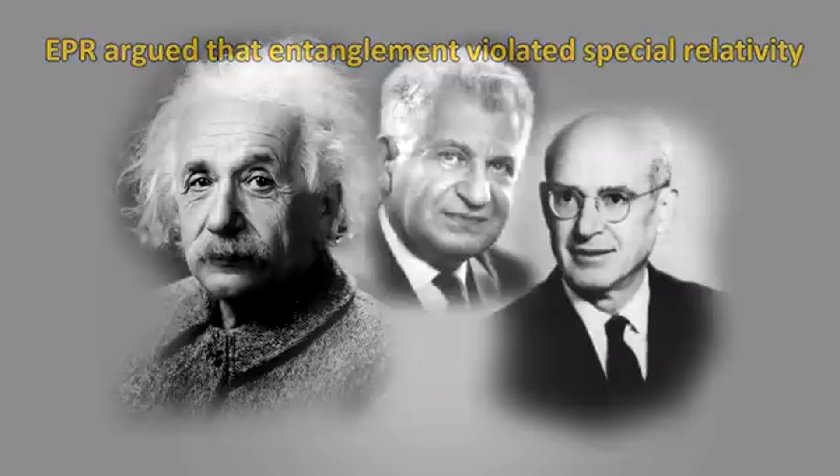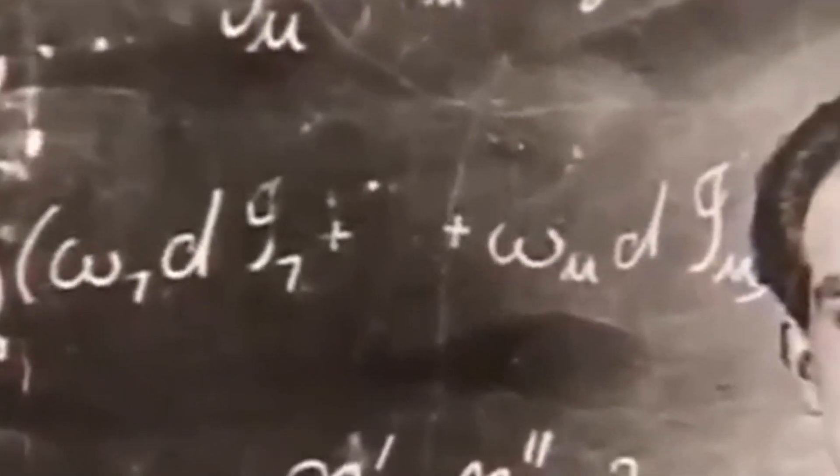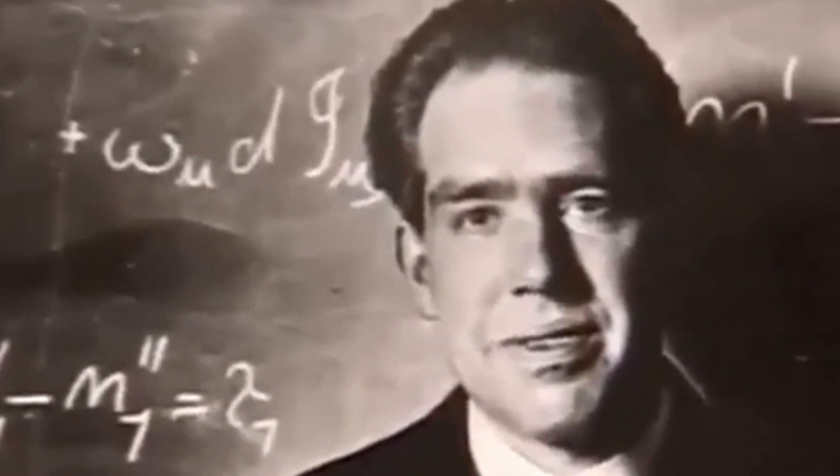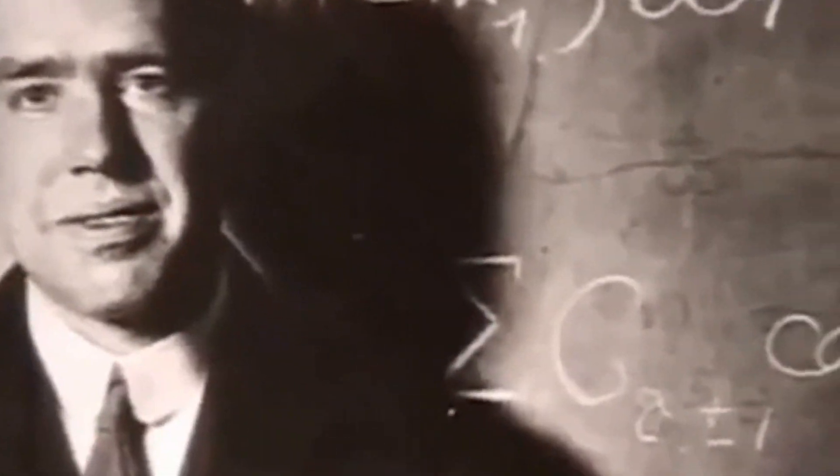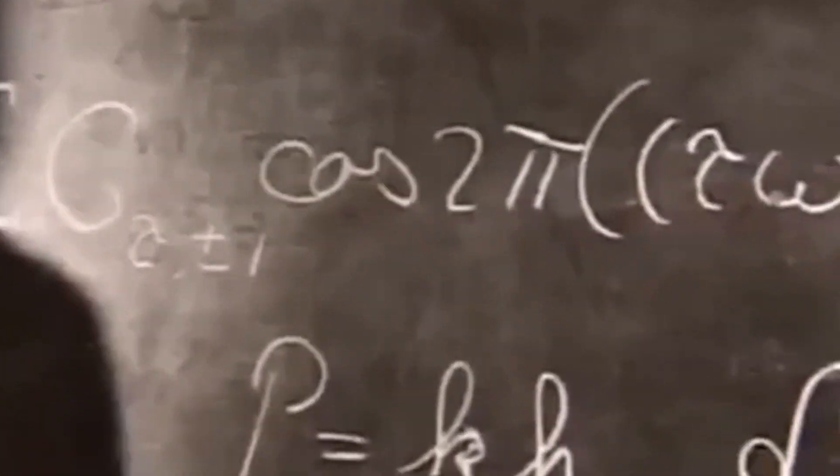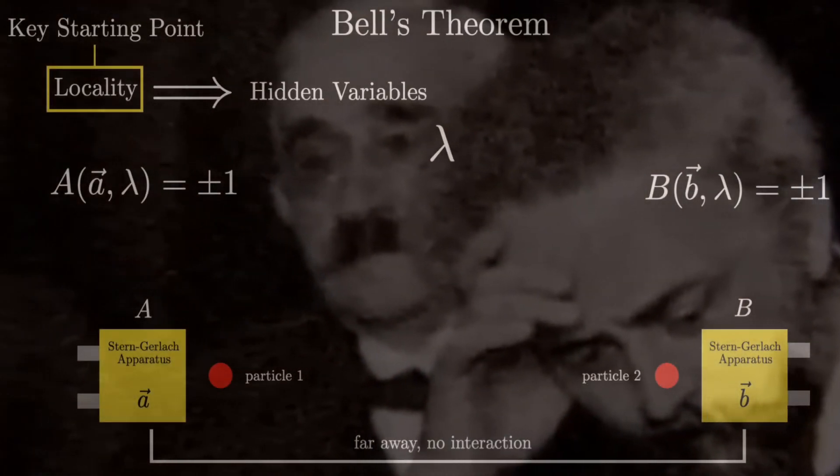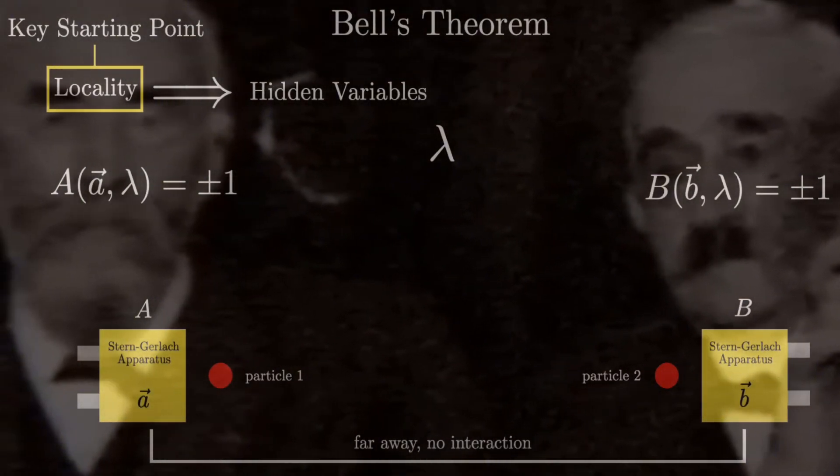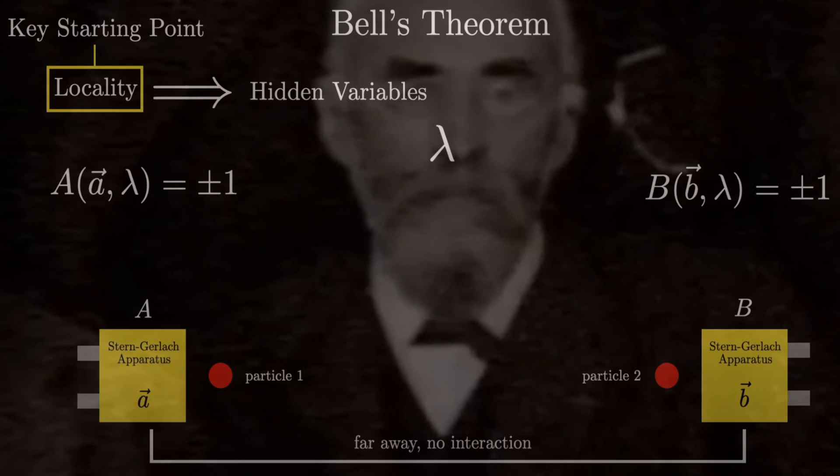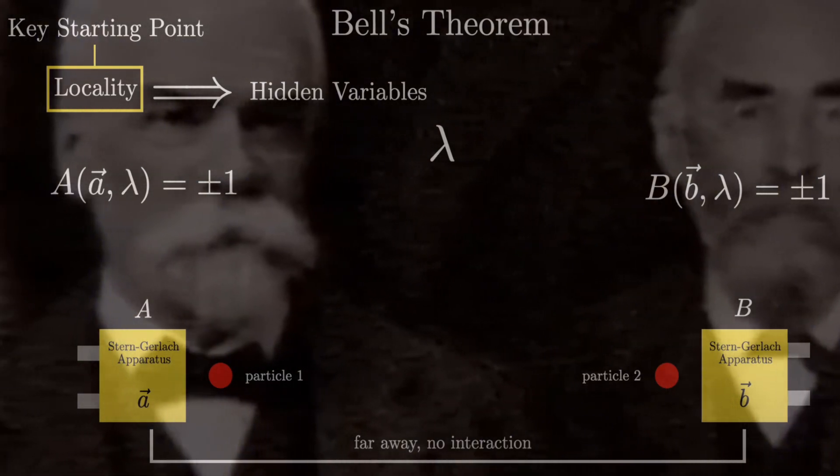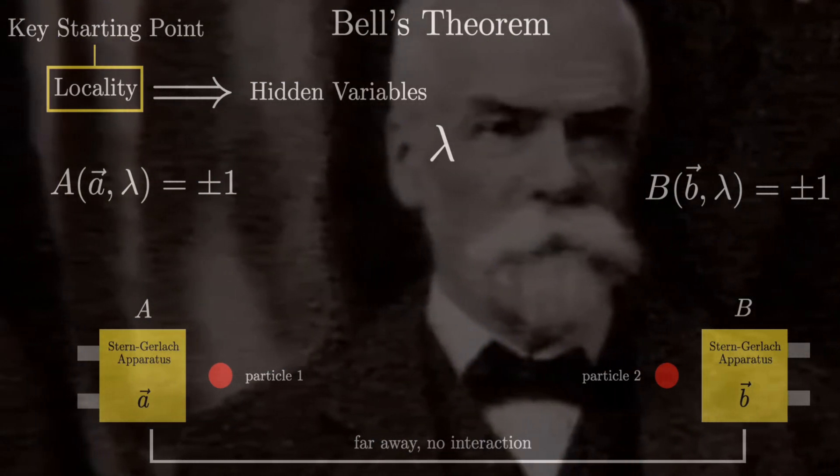The answer seemed unreachable, until one man stepped forward. In 1964, John Bell, a visionary physicist, proposed an audacious idea, Bell's theorem. His work offered something no one had dared to suggest before, a way to prove Einstein wrong or right once and for all.